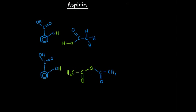Here we're going to look at a pretty standard household painkiller called aspirin. Before we get into aspirin itself, first look at how it came about. Many years ago, it was discovered that there was a naturally occurring substance called salicin, which could be used as a painkiller. A few chemists tweaked the structure of salicin slightly to produce something called salicylic acid, and it was found that salicylic acid was in fact an even better painkiller than salicin.